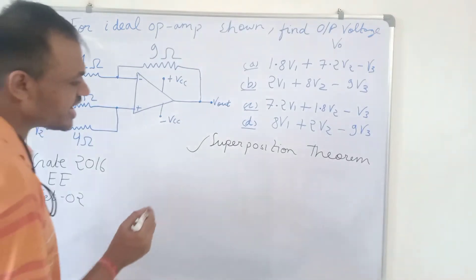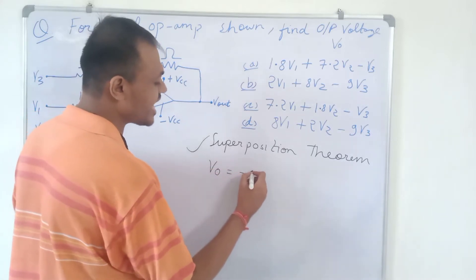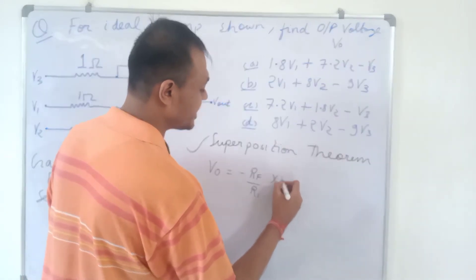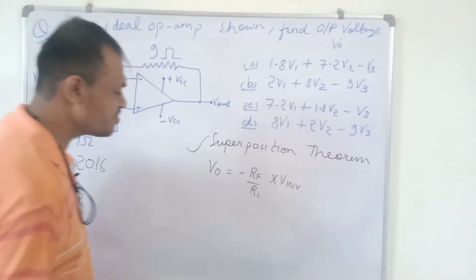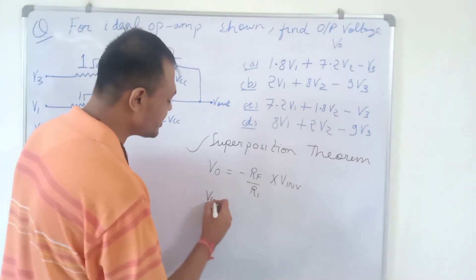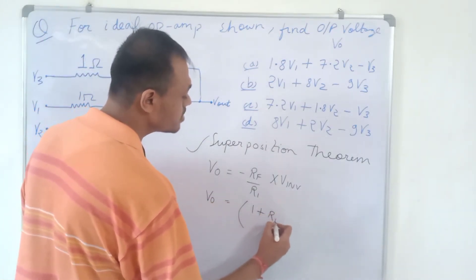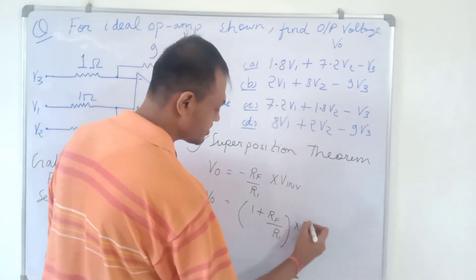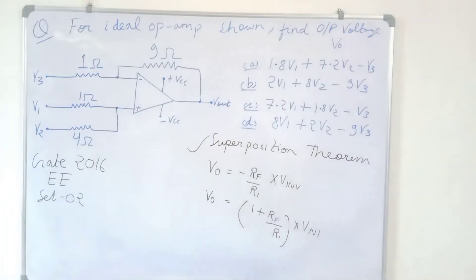For the inverting configuration of the op-amp, the output is: V0 = −(Rf/R1) × V_inverting. When the op-amp is in the non-inverting configuration, the output is: V0 = (1 + Rf/R1) × V_non-inverting. So we have these two key formulas to apply.